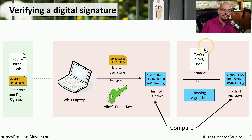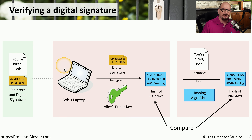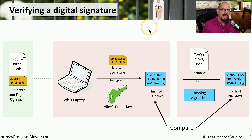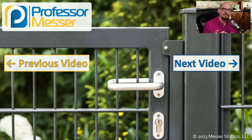Bob can now compare the hash included with the digital signature to the hash he manually created from the plain text. If they match, we not only know the information received is exactly the same as what was sent, but we know it had to come from Alice. This entire process of creating and verifying a digital signature is usually initiated by clicking a button or happens automatically — you normally never see it occur. But understanding the digital signature process and its verification helps you better understand the integrity and proof of origin that are so important when working with transactions like this.